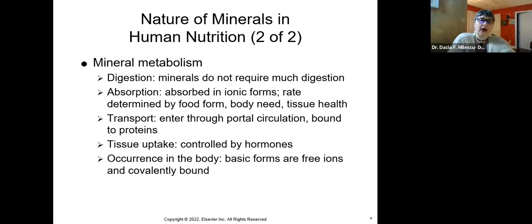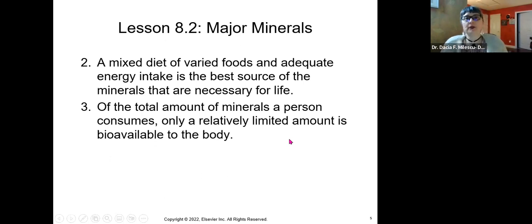It enters through the portal circulation. It can be bound to proteins. There's an uptake of it by the tissue, which is controlled by specific hormones. And the basic forms can be as a free ion, or it can be covalently bonded. Now we can get major minerals in our foods and it'll provide adequate energy intake. This is the best way to get enough minerals to sustain life. The total amount of minerals a person consumes is only a relatively limited amount of bioavailability in the body. We are not going to use up all the minerals that we actually take in.